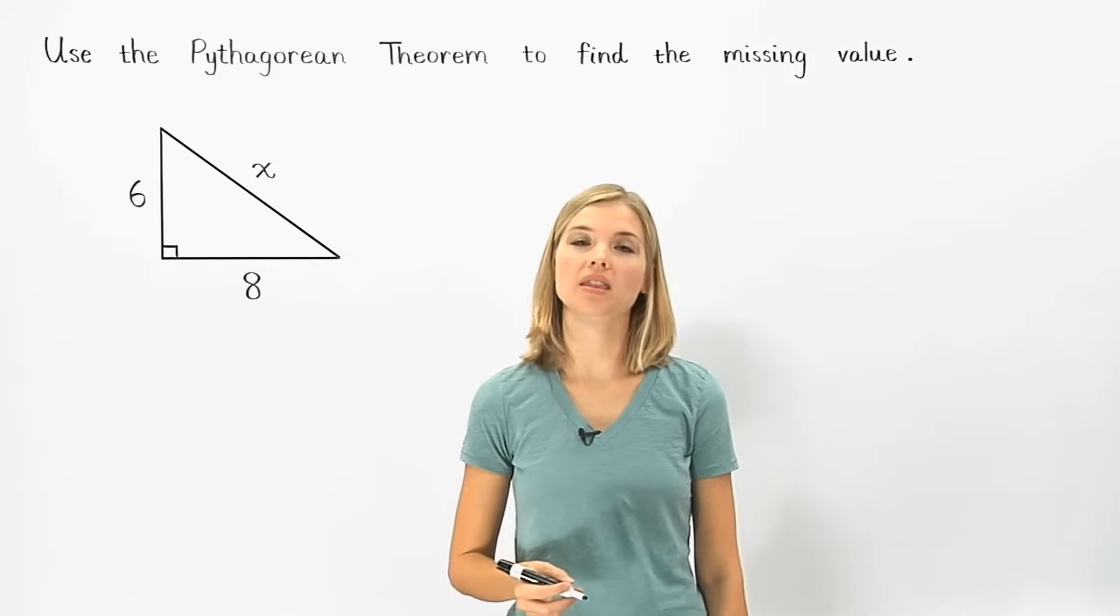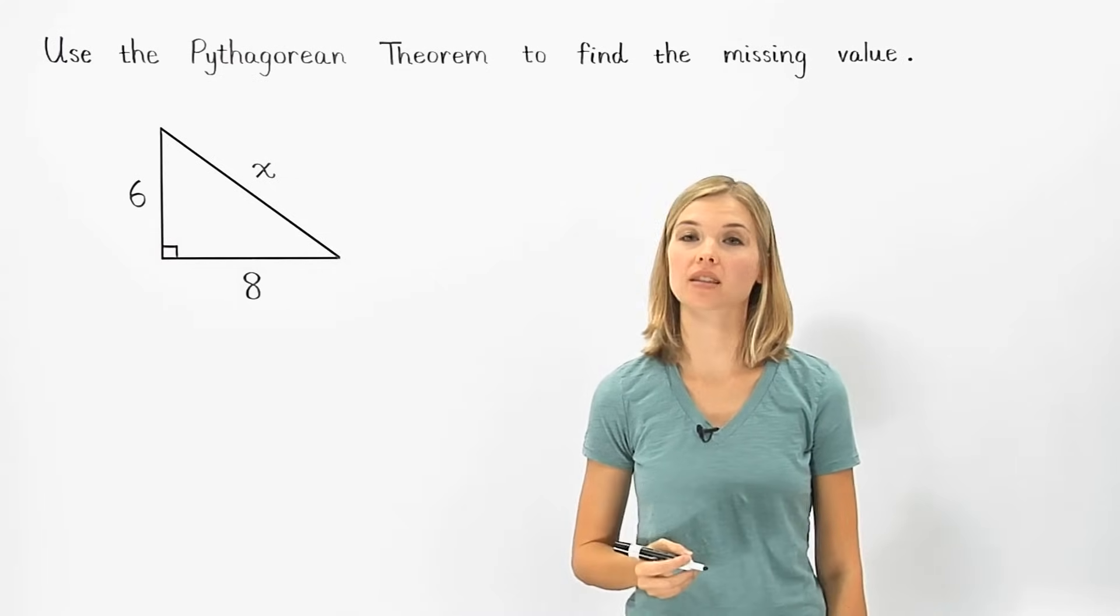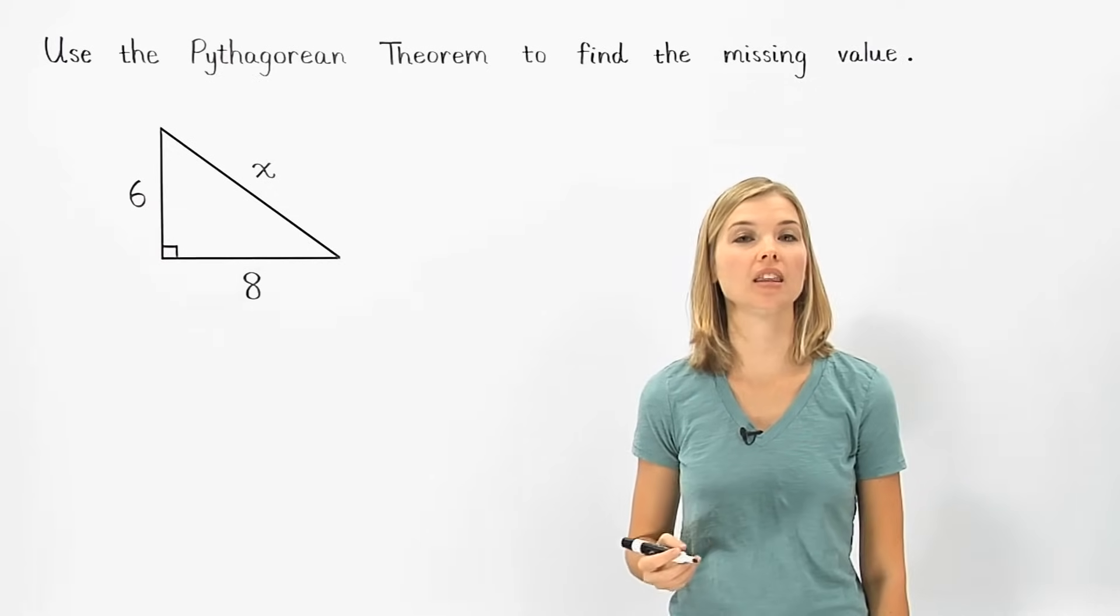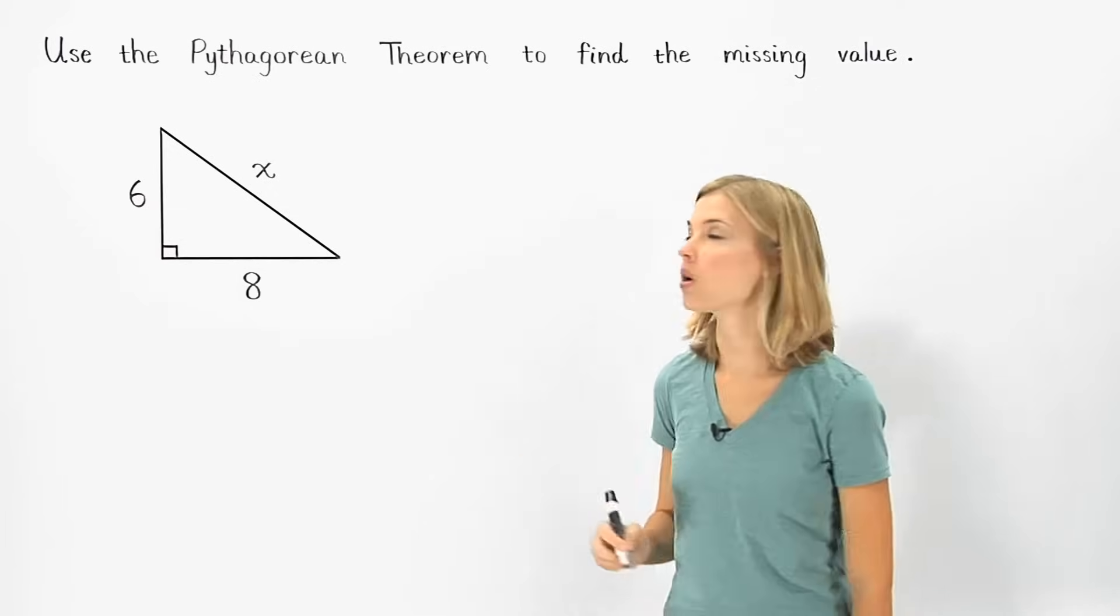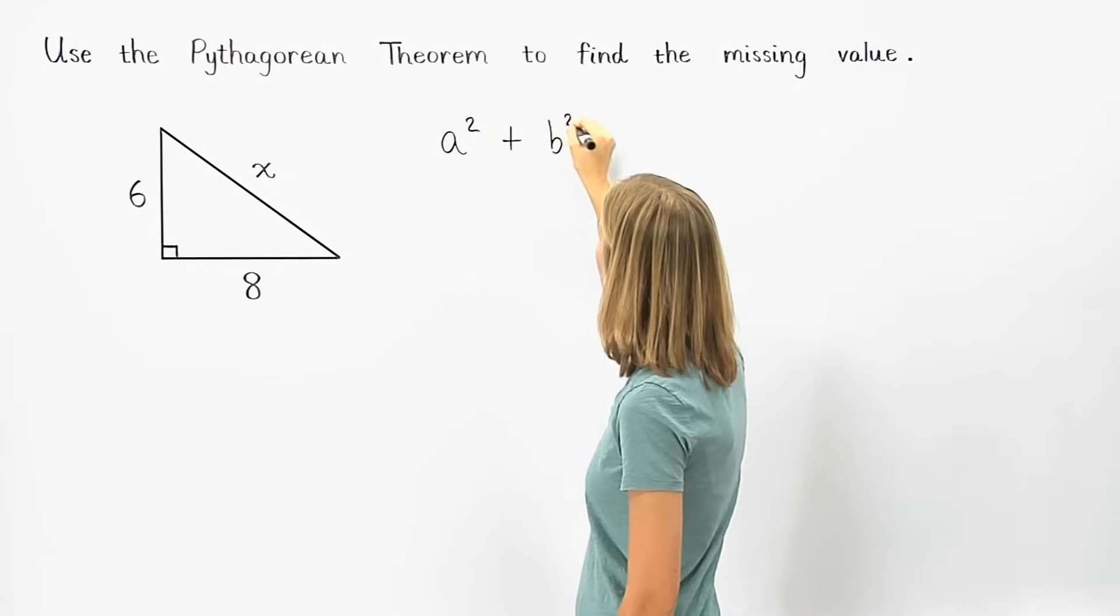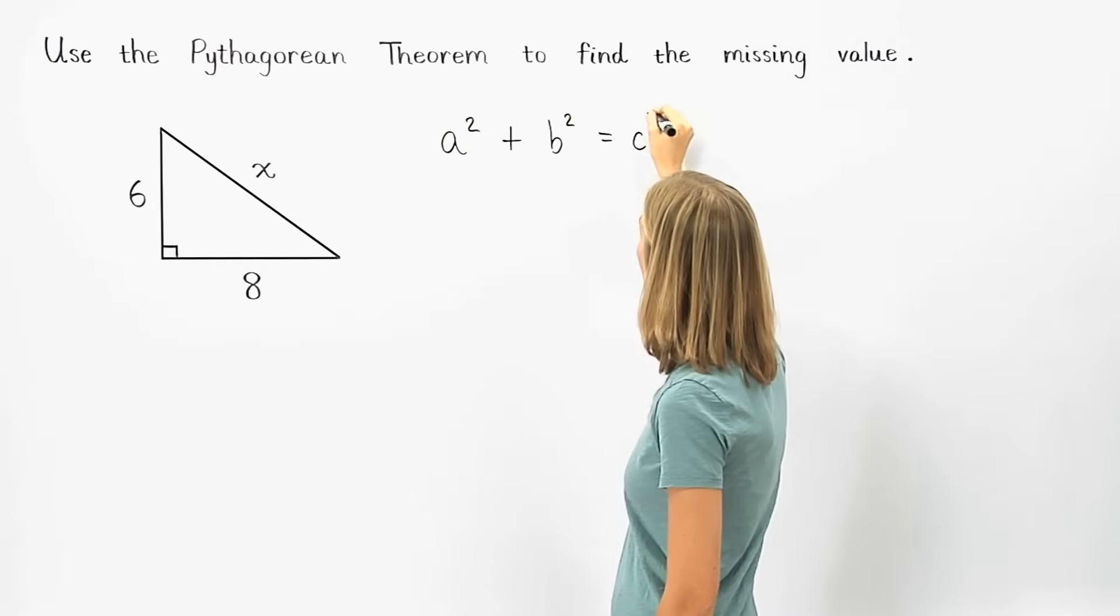The Pythagorean Theorem states that the sum of the squares of the lengths of the legs of a right triangle is equal to the square of the length of the hypotenuse, or a squared plus b squared equals c squared.